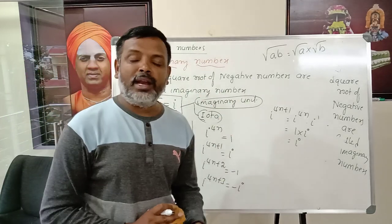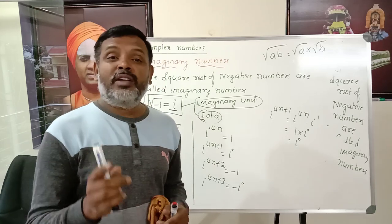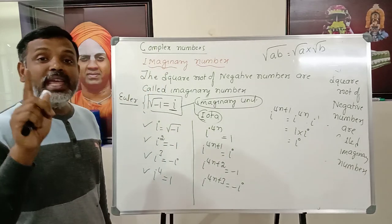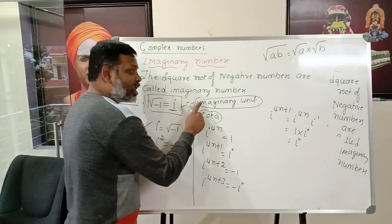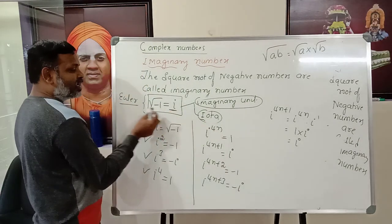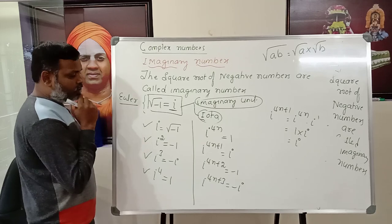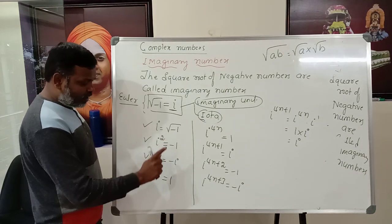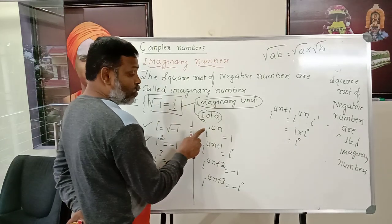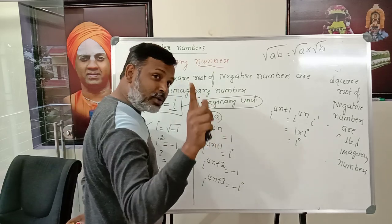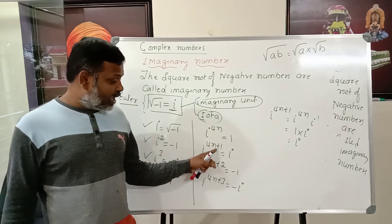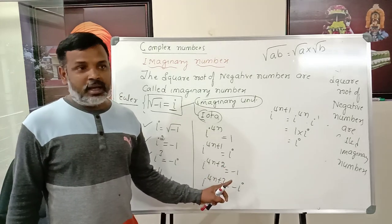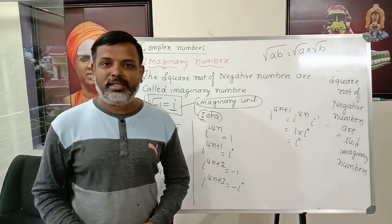To summarize: square roots of negative numbers are called imaginary numbers. The imaginary number √(−1) is denoted by i, called iota, first suggested by mathematician Euler. So: i = √(−1), i² = −1, i³ = −i, i⁴ = +1. When the power of i is a multiple of 4, the answer is always 1. In general: i^(4n) = 1, i^(4n+1) = i, i^(4n+2) = −1, i^(4n+3) = −i. Using this, we can solve problems related to imaginary numbers.